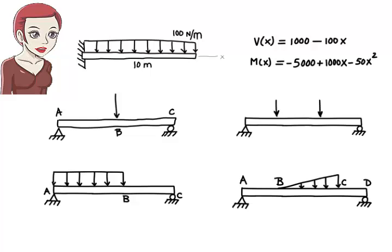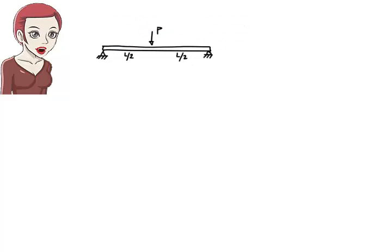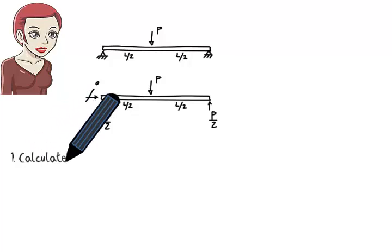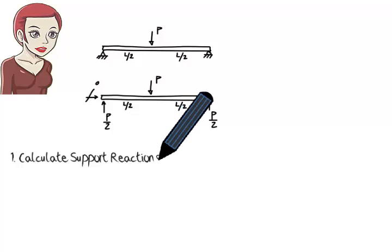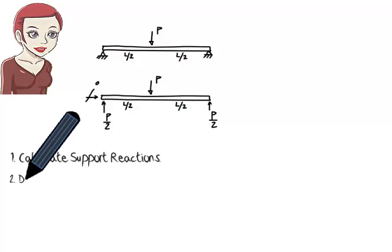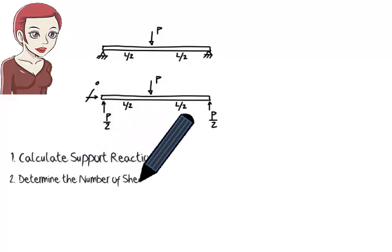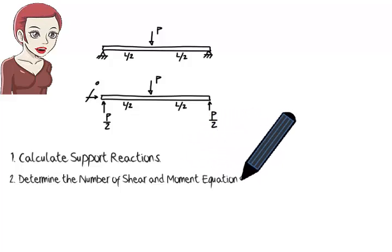Now that we know it may be necessary to have multiple equations for representing shear and moment in beams, let's talk about how we should go about actually formulating such equations. Given a beam, we always start by calculating its support reactions, so step one is to calculate the support reactions. Step two is to decide how many shear and moment equations we need, that is, how many segments the beam is divided into by the loads.